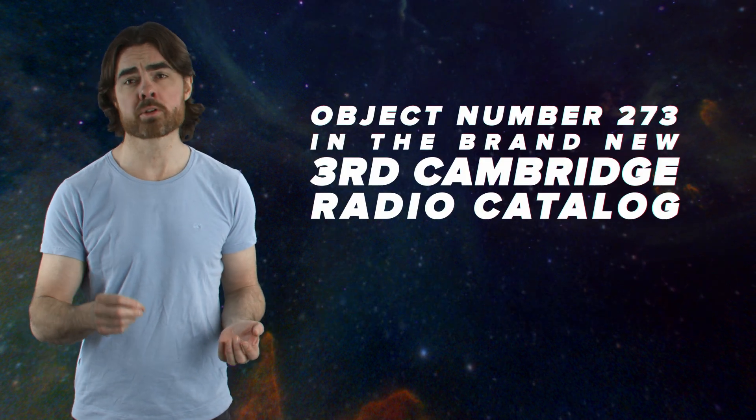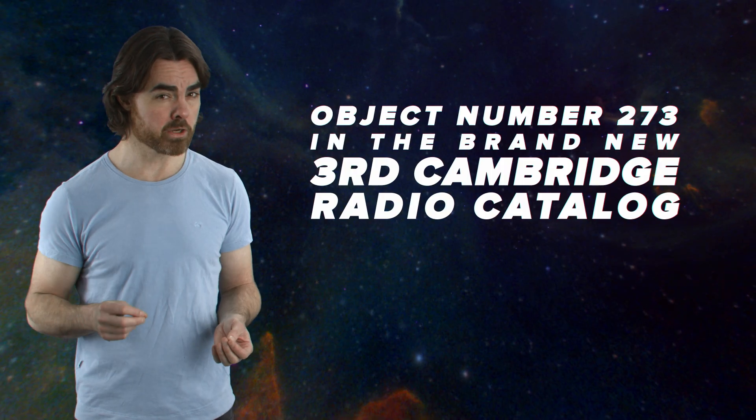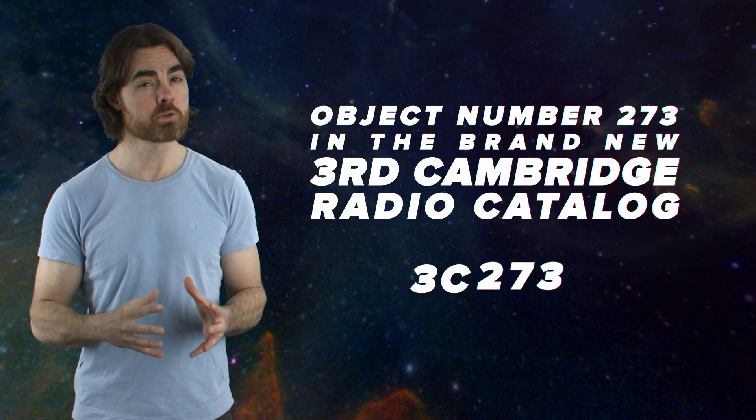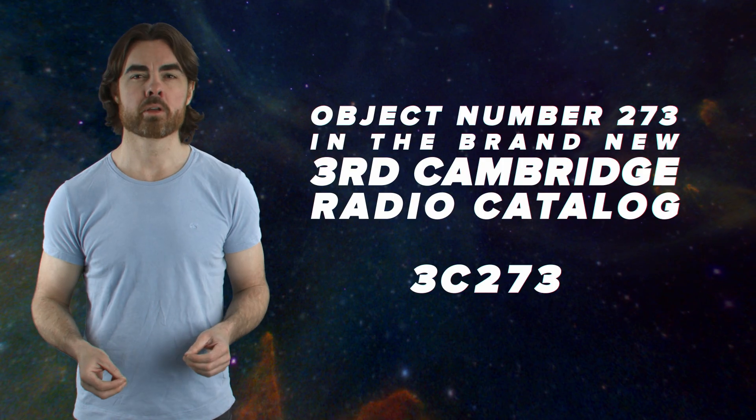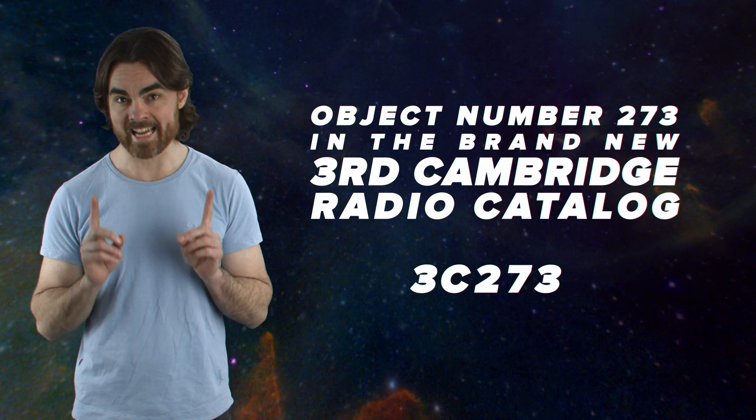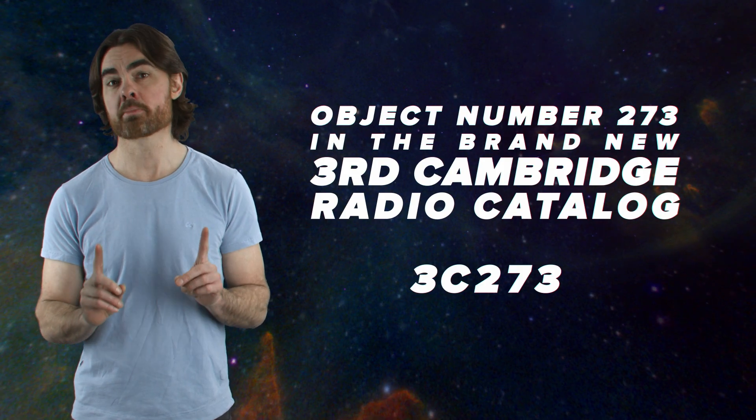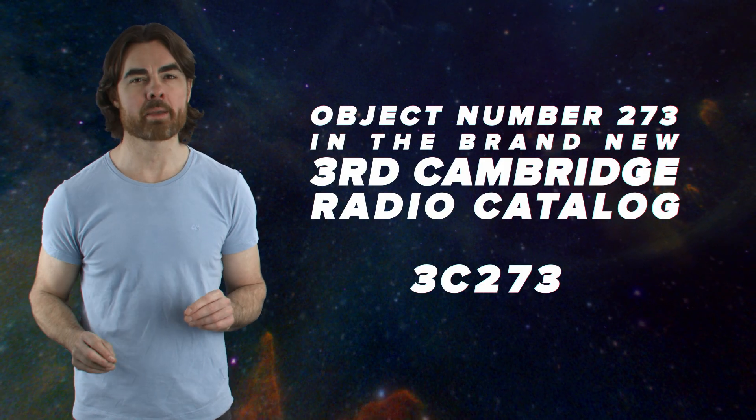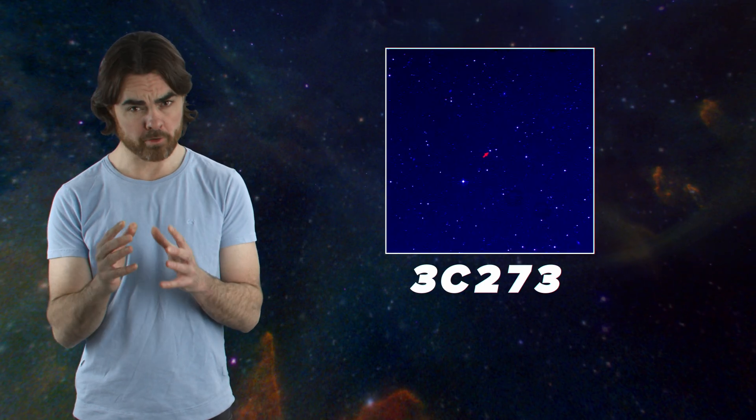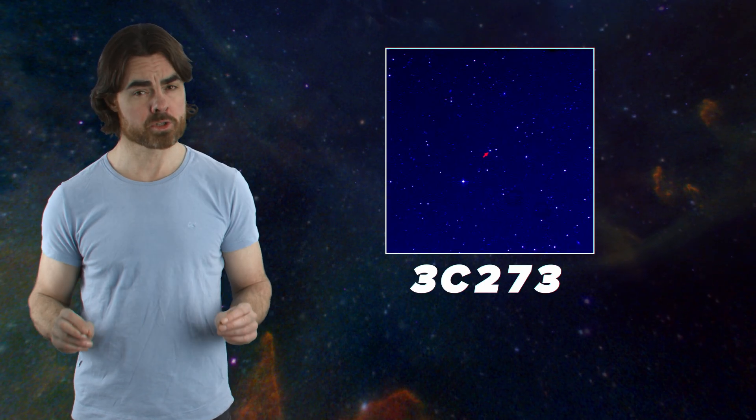It was object number 273 in the brand new 3rd Cambridge radio catalogue, 3C273 for short. The Parkes radio telescope in Australia was trained on the occultation and registered the exact instant that the radio signal vanished behind the moon. That timing allowed astronomers to identify a tiny star-like point of bluish light as the source of the radio emission.